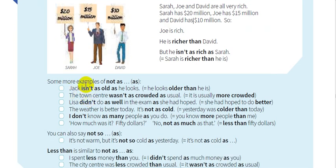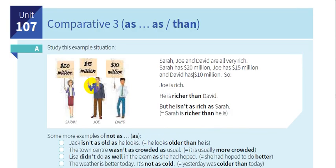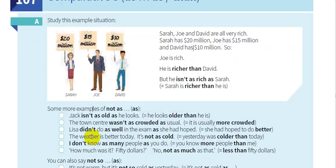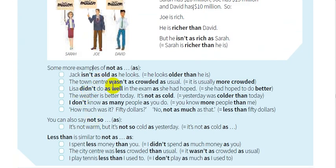Today I'm going to talk about this unit, inshallah. Please write down what I tell you — if there is something important, pay attention and write, because just watching will not help you understand the unit. First of all, we need to know what comparative means. Comparative means something is of a higher degree than another. For example: Jack isn't as old as he looks — he looks older than he is.